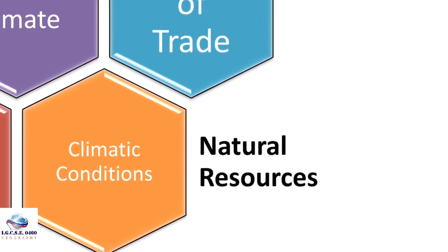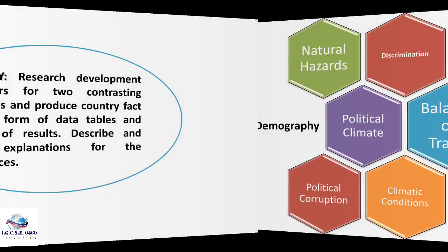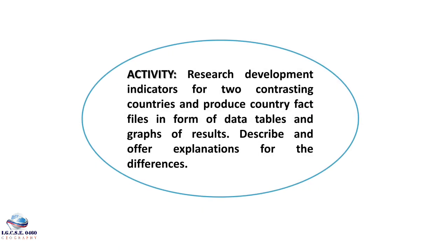The last factor is natural resources — minerals, water resources, forest resources, and others. These resources act as raw materials for industry. Countries with more natural resources, such as oil, tend to become richer compared to those that lack them, because their industrialization is held back. There is also an activity: research development indicators for two contrasting countries and produce country fact files in the form of data tables and graphs.